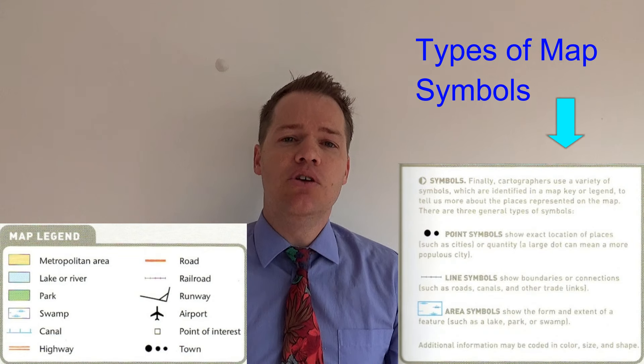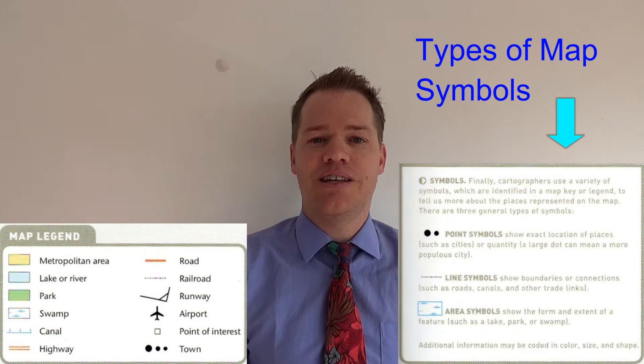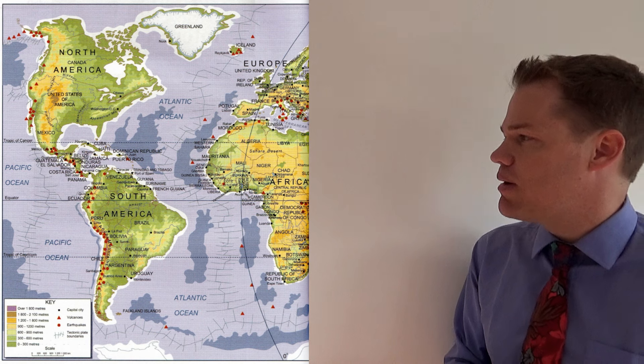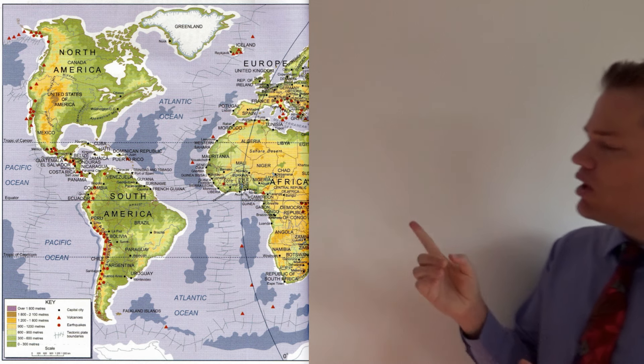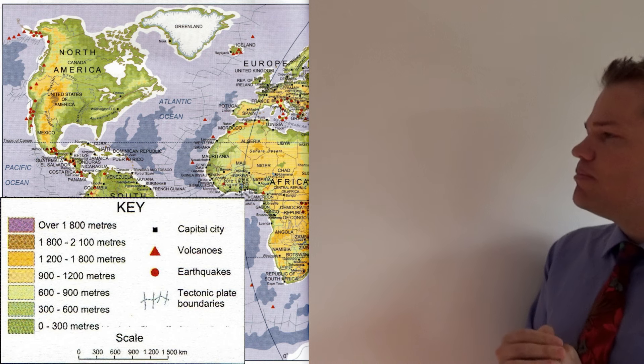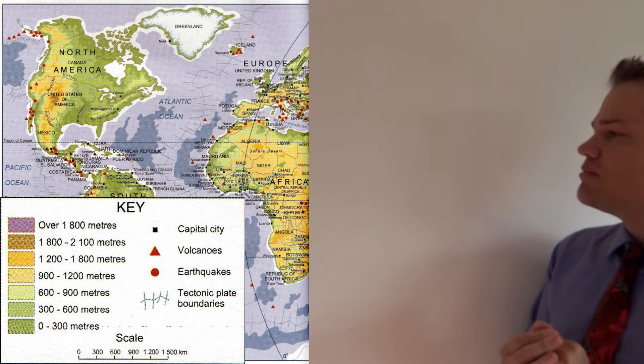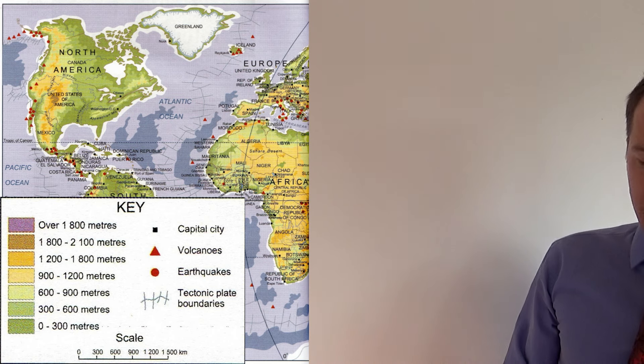I've posted videos on different types of scales, so feel free to click the links in the description below. The next thing — and this is very important — is about actual map reading. The map key or the map legend is like your dictionary, because on your map you'll see symbols and lines, and you might not know what these represent. If you look at the key or the legend, you'll see exactly what these lines and symbols mean. On the screen there's a map with lines, colors and symbols, so let's zoom in on the map key.